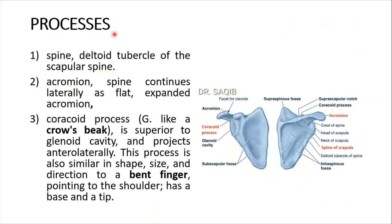Processes are very important, bearing various attachments. First is the spine — the deltoid tubercle of the scapular spine. Then is the acromion. This spine continues laterally as a flat, expanded acromion — this is the acromion as a continuation of the spine.